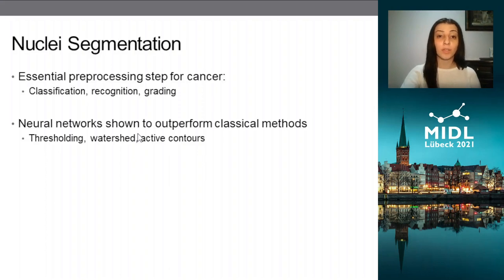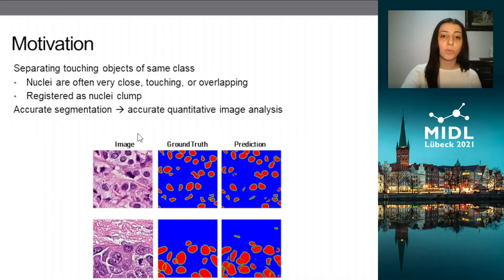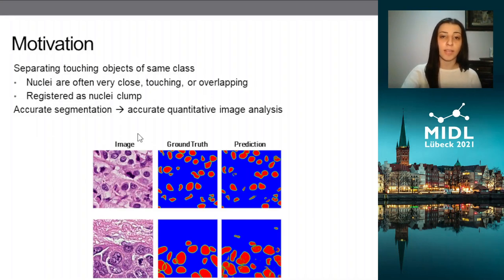While neural networks have been shown to outperform classical segmentation methods, there's still a lot of room for improvement. In this work, we wanted to focus on improving the boundary segmentation, and this is especially important for cases where nuclei are nearby, touching, or overlapping one another.